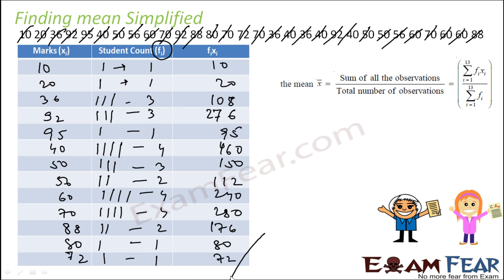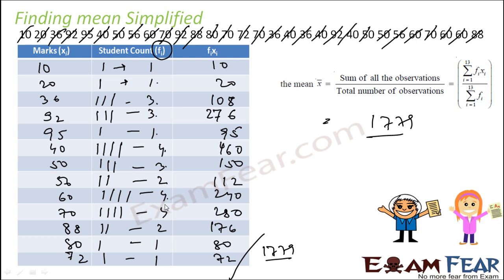If you add all the fi·xi products, you get again 1779. Mean is nothing but sum of all observations by total observations. That is Σfi·xi = 1779 and Σfi = 2+3+5+8+9+13+16+18+22+26+4 = 30. So you get 59.3. This is the easier way. If the list is very long, the frequency table actually helps. Instead of Σxi by frequency, we say Σfi·xi by Σfi. We've created an ungrouped frequency distribution table. With this, the formula is: mean = Σfi·xi / Σfi — same value but easier to compute.